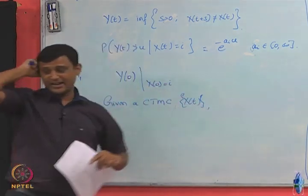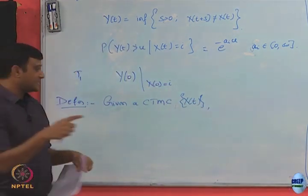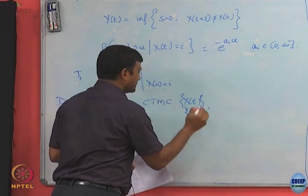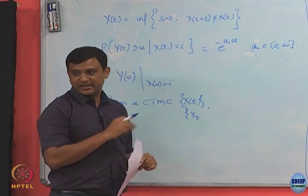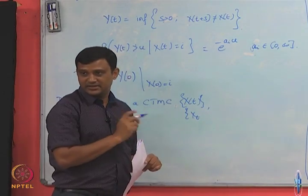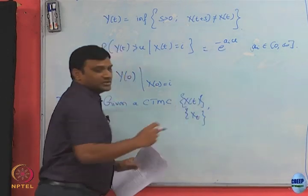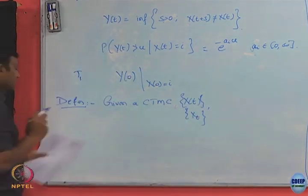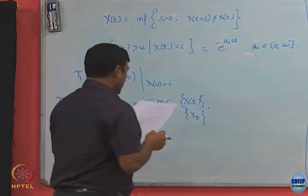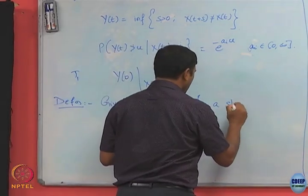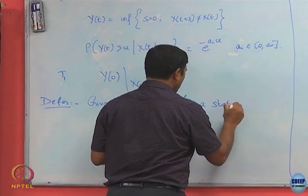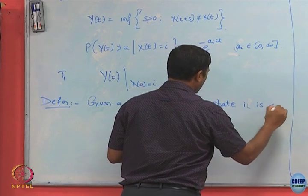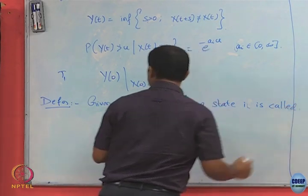The sequence of random variables is written as X(t) or with a subscript t — both notations indicate the same thing. A state i is classified based on the value of the parameter ai associated with it.